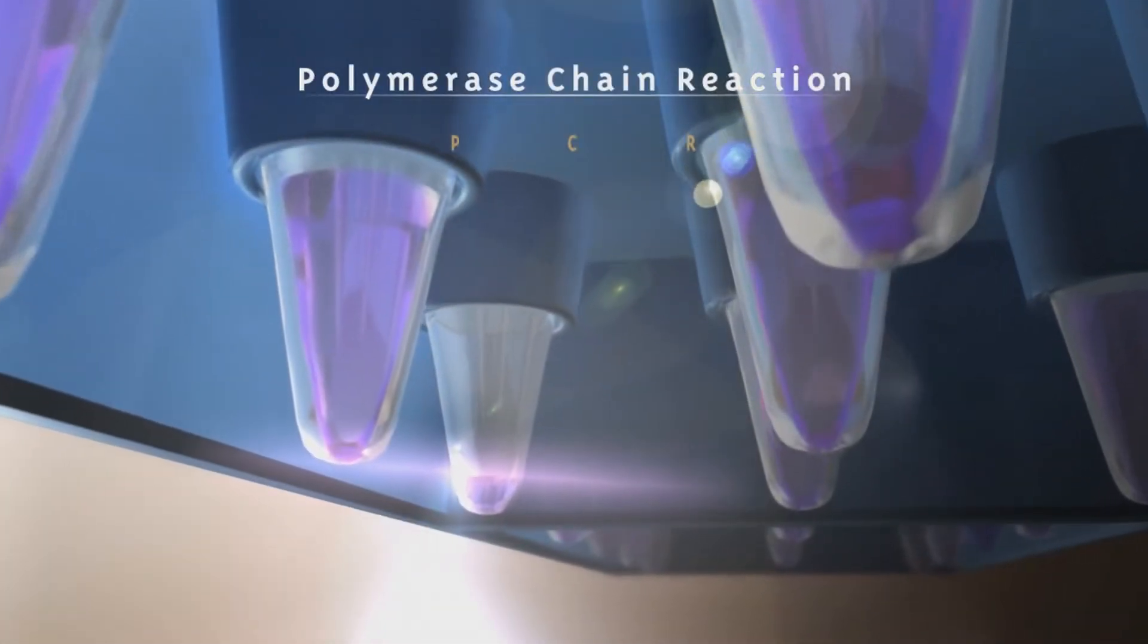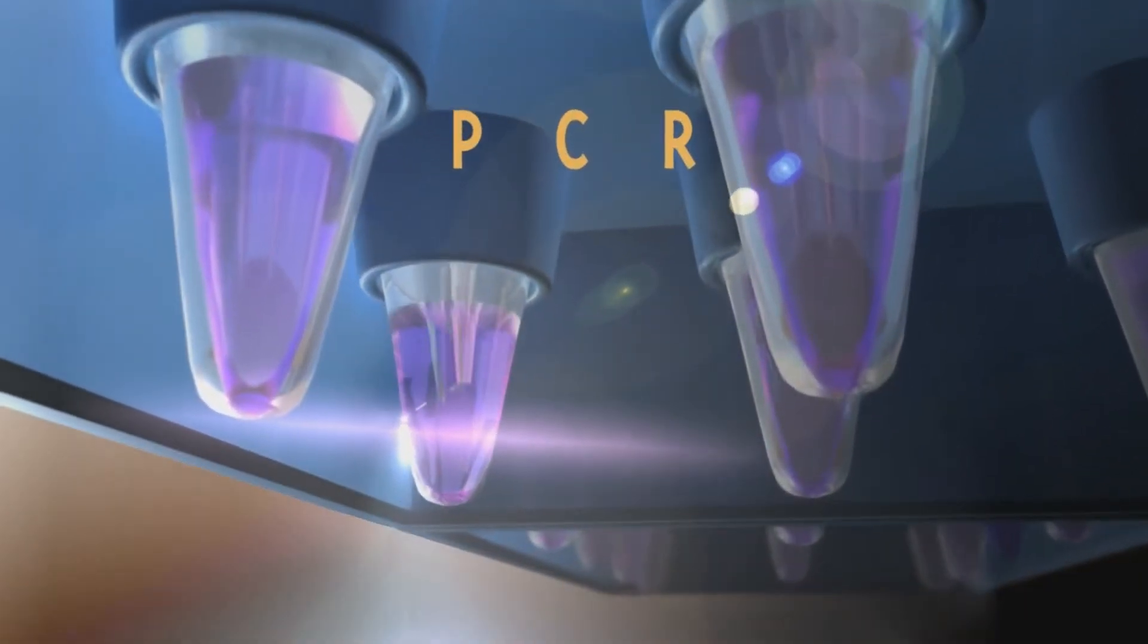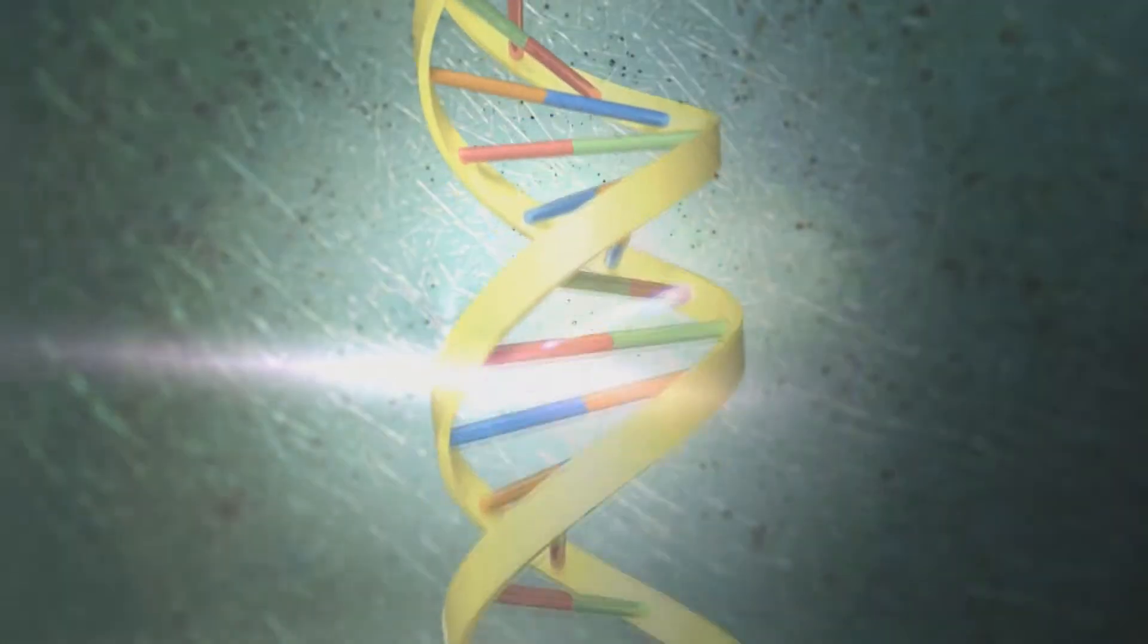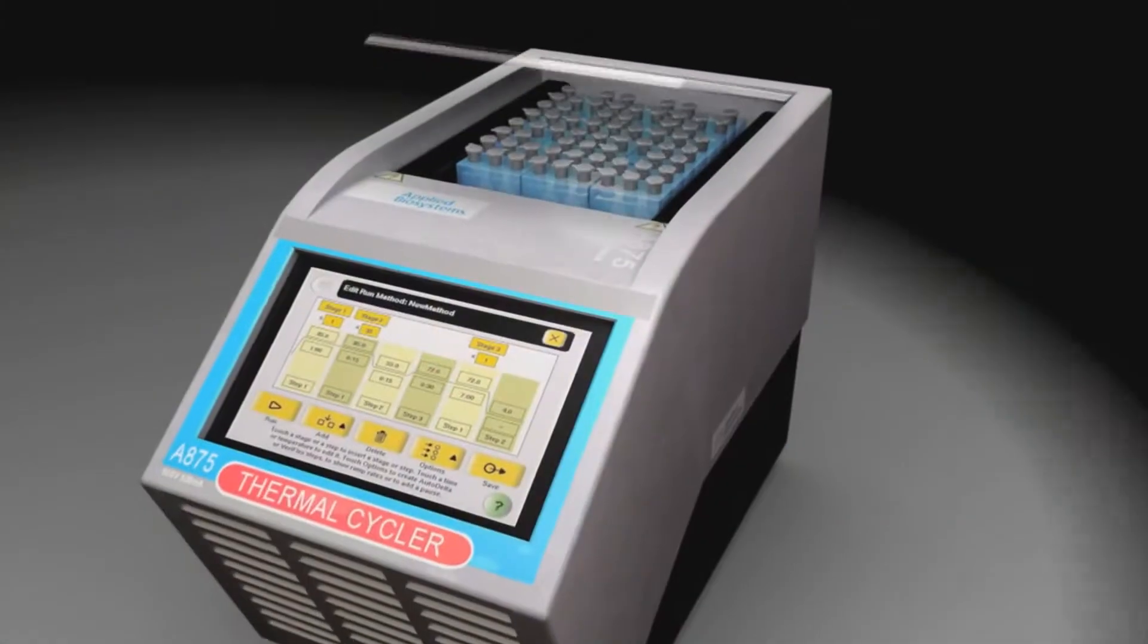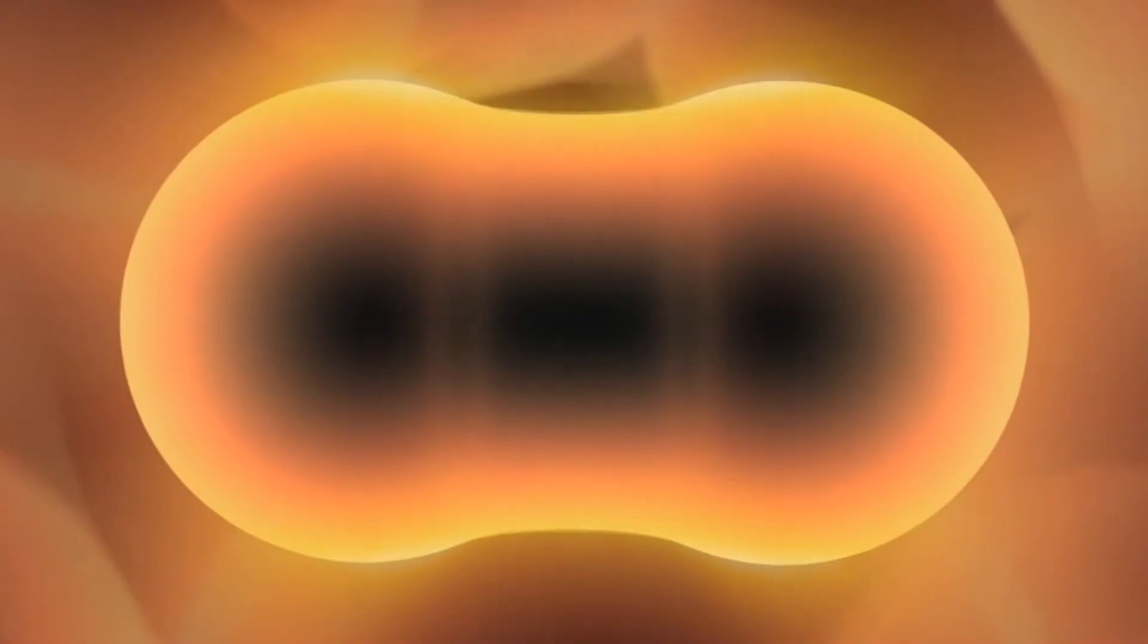Polymerase Chain Reaction, or PCR, is a simple yet essential way to make copies of a small amount of DNA by exploiting DNA's natural ability to replicate itself when a cell divides.